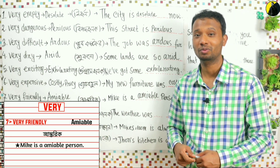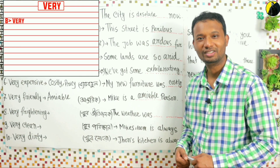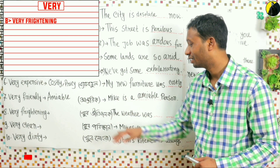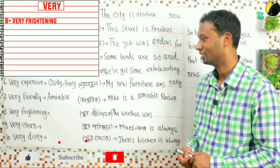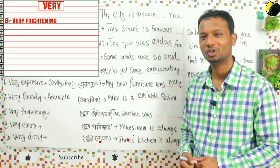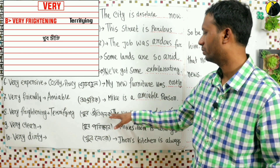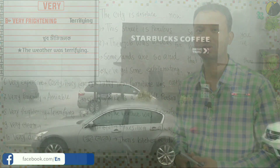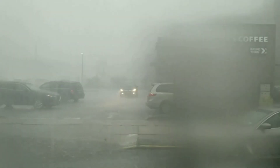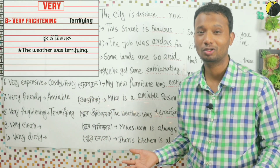This is not our mother tongue, so we need to put in effort. Number eight: very frightening — meaning something that makes you afraid, very scary. The advanced synonym is: terrifying. For example: 'The weather was terrifying.' 'It was a terrifying experience.'